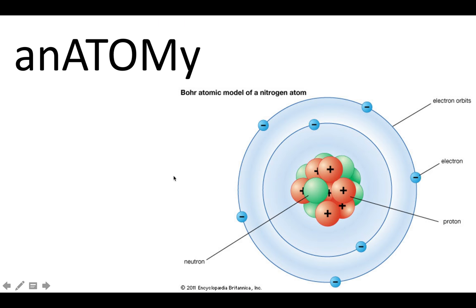So let's talk about the anatomy of an atom. All atoms have protons, neutrons, and electrons. Protons, neutrons, and electrons are subatomic particles.